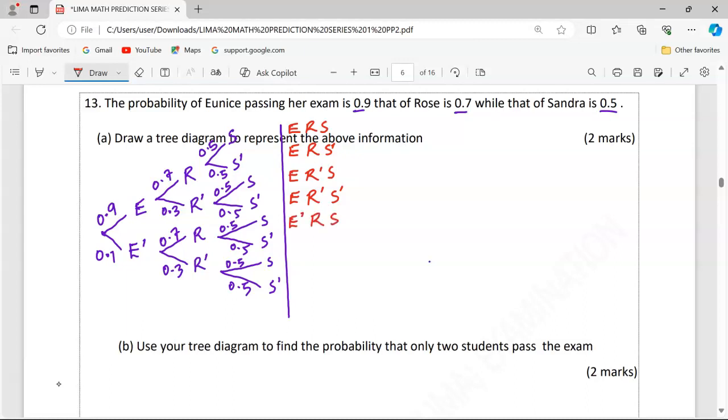We have Eunice failing, Ross and Sandra passing. Then, Eunice fails, Ross fails, but Sandra passes. And finally, all of them failing. So, these are the probabilities now listed at the end of each bracket.